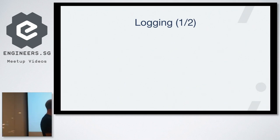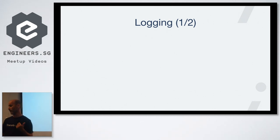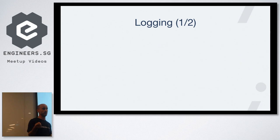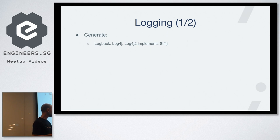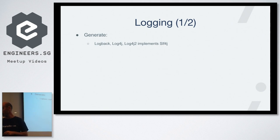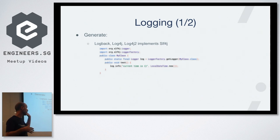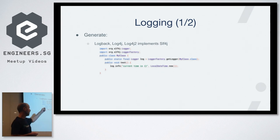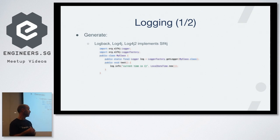I'll start with the first pillar, logging — the most basic and easiest one. The first task is generating logs through instrumentation. In the Java world, you have one API called SLF4J with multiple implementations. In code, whenever you want to send some information, you simply call log.info with whatever context or information you need.